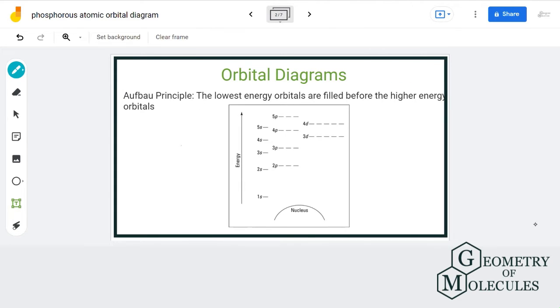The first rule is Aufbau's principle that arranges orbitals in terms of their energy levels. So down here we have one s sublevel that has one orbital, then comes to s sublevel and so on. So the electrons will go in 1s orbital first and then move on to the orbitals having higher energy.